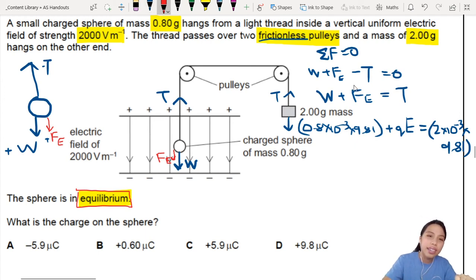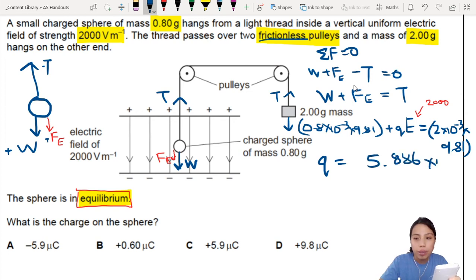I forgot to write E. This E is 2000. So when you write this out and then you will recalculate everything: 2 times 10^-3 times 9.81 minus 0.8 times 10^-3 times 9.81 divided by 2000. You will get a value Q equals to 5.886 times 10^-6 coulombs, which you can rewrite as 5.9 times 10^-6.